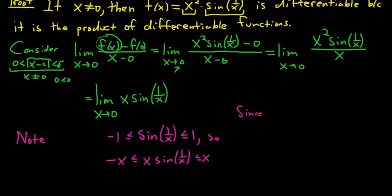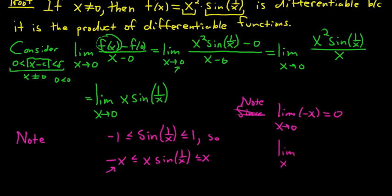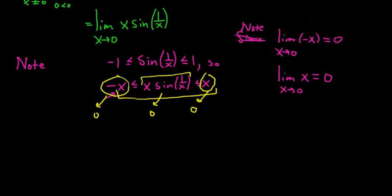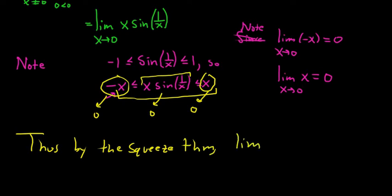Now we can use the squeeze theorem. Note that if you take the limit of the left-hand side, you can just plug in 0, giving negative 0, so 0. And if you take the limit of the right-hand piece of the inequality, you also get 0. So we have x times sine of 1 over x bounded between two expressions that both go to 0. Therefore, by the squeeze theorem, our limit is equal to 0.